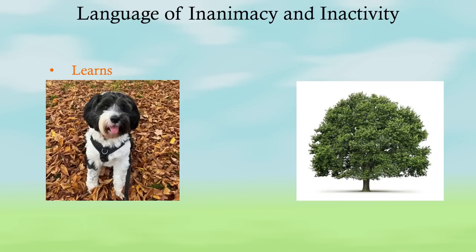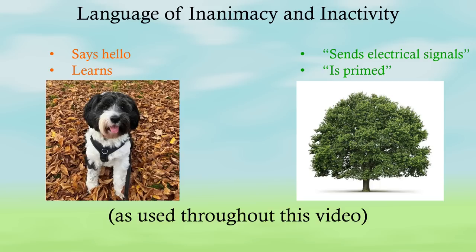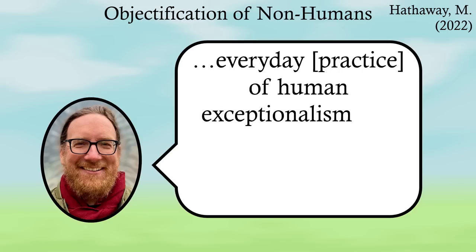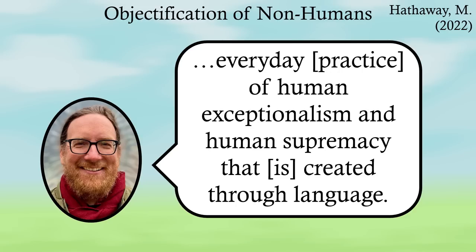A dog learns, a tree is primed. A dog says hello to a friend. A tree sends electrical signals to other trees in the forest. Along with the usage of the pronoun it to describe non-humans, some would call this objectification an example of an everyday practice of human exceptionalism and human supremacy that's created through language.